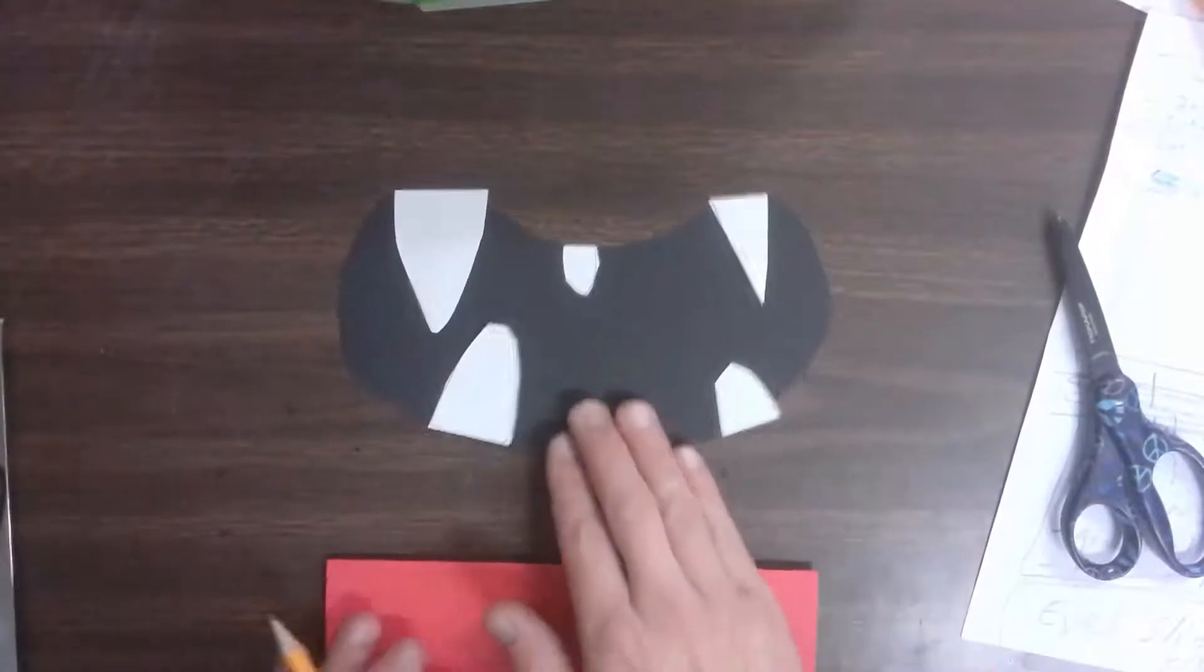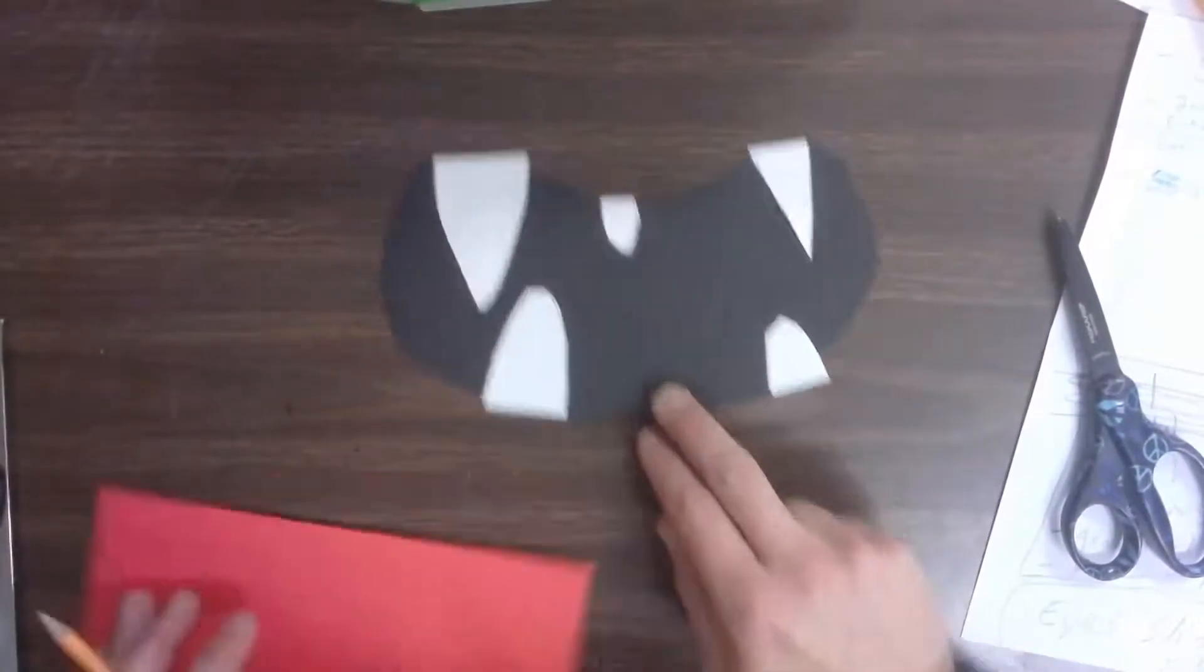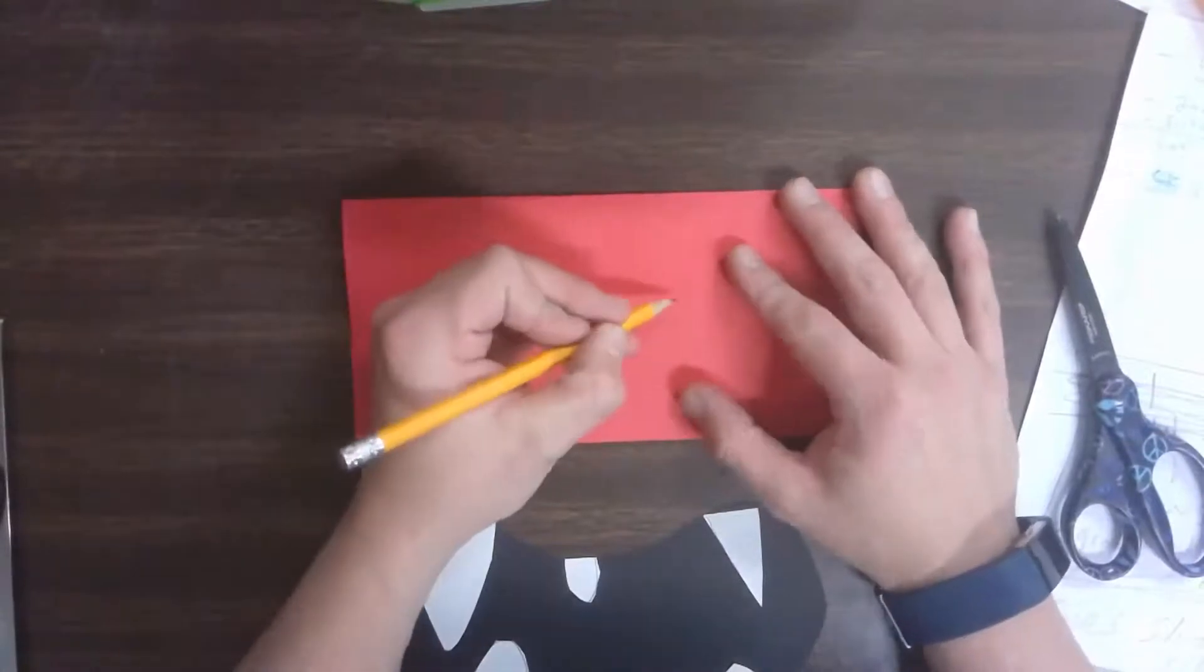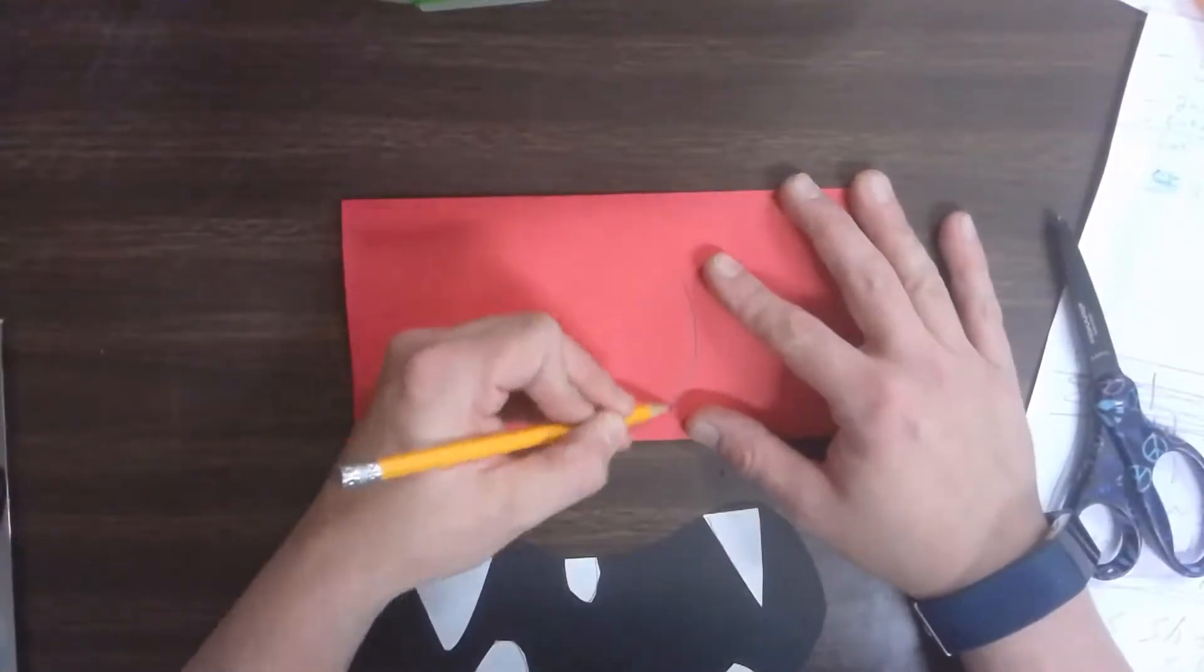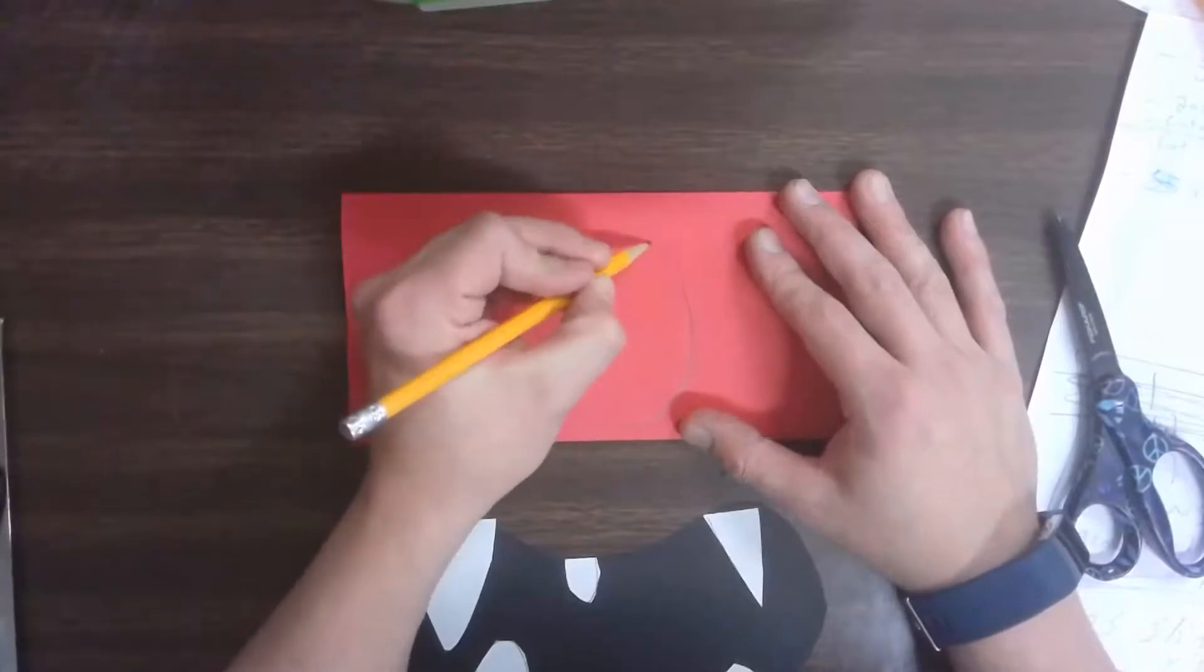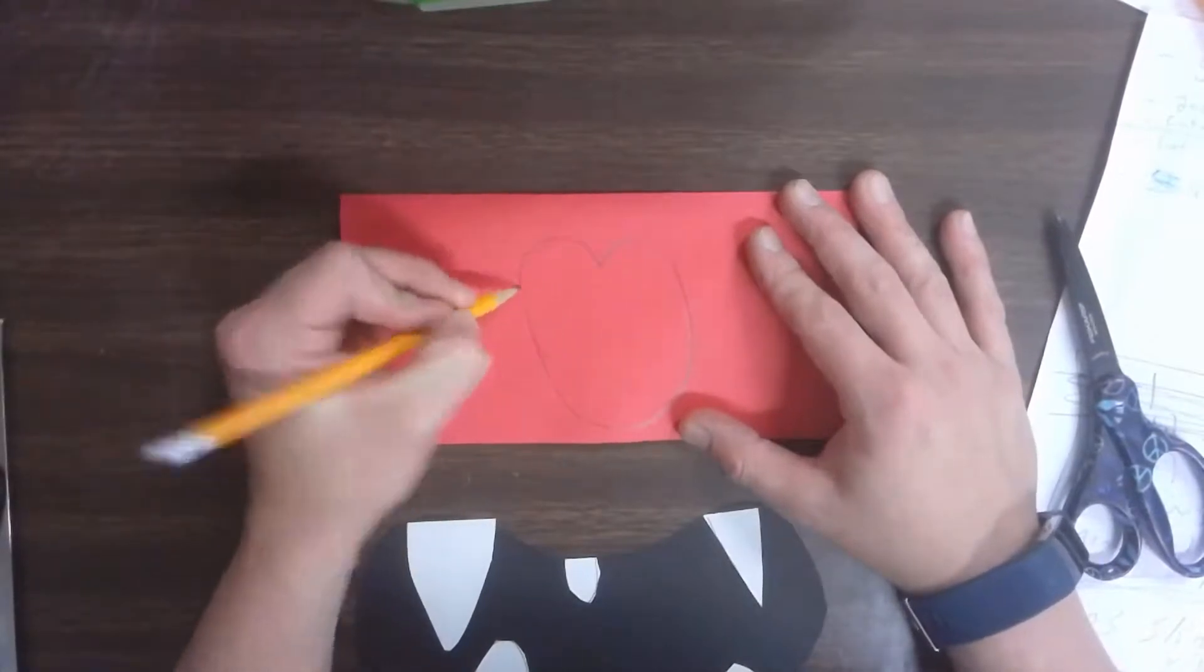Now for the tongue, I chose my red piece here. There's a few different ways you can make it, but I'm going to start with a big letter U and I'm going to connect the top with a letter M, kind of like that.